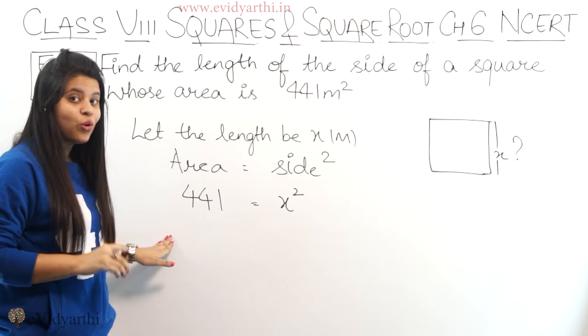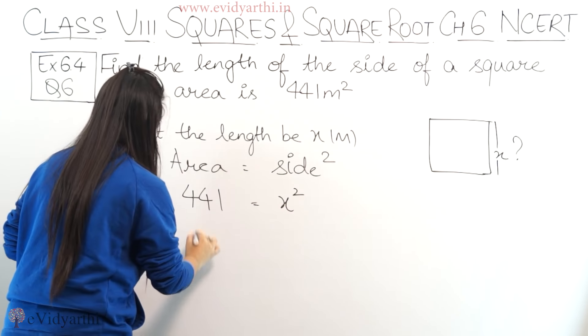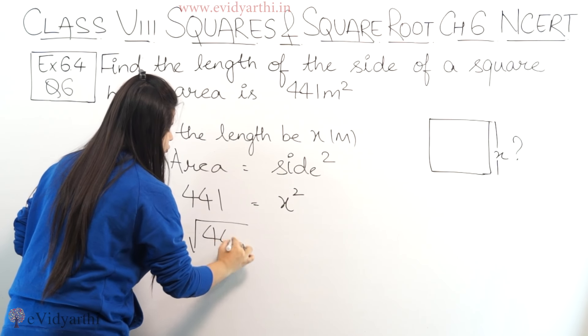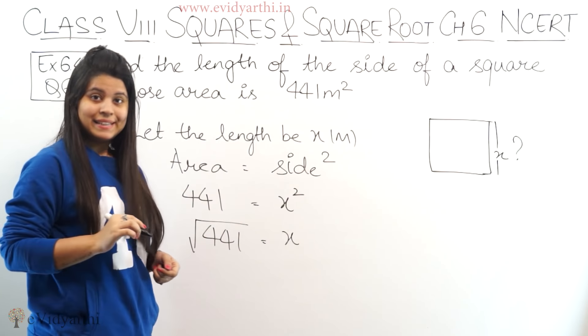Now see, here there is square, so when it goes to the other side it will become under root. This will become under root 441 equals to x. Right?